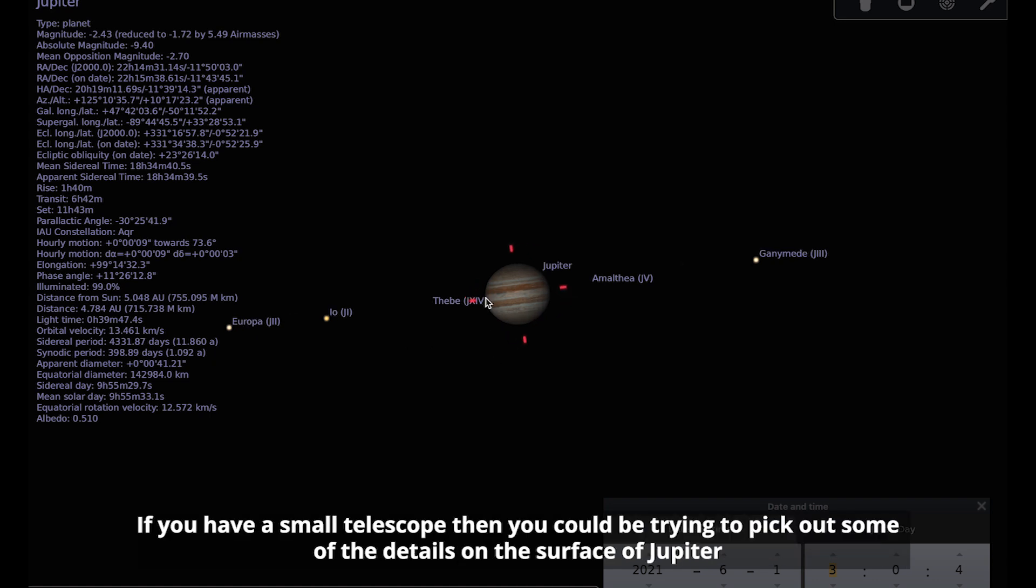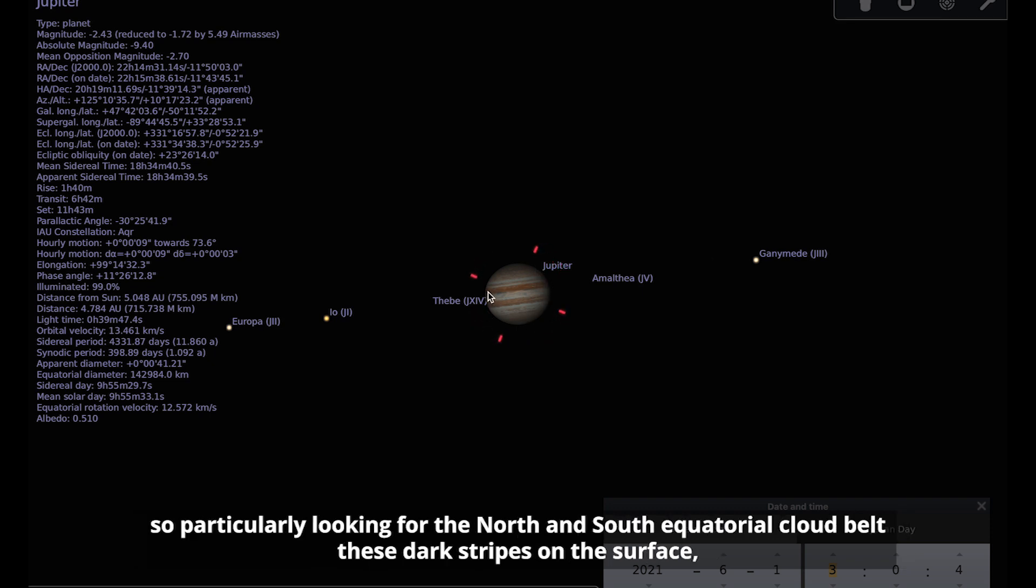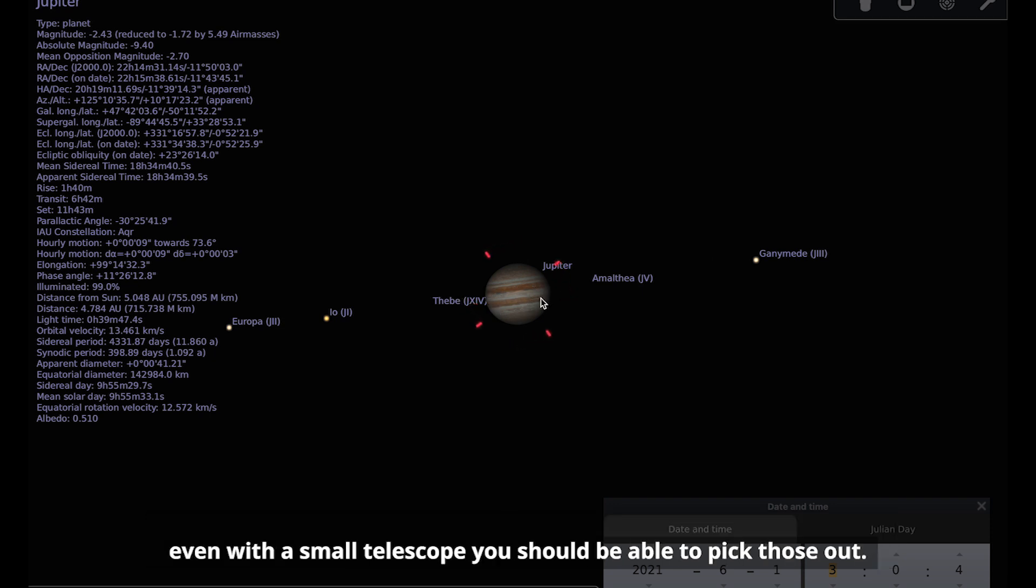If you have a small telescope, then you could be trying to pick out some of the detail on the surface of Jupiter, particularly looking for the north and south equatorial cloud belts, these dark stripes on the surface. Even with a small telescope, you should be able to pick those out.